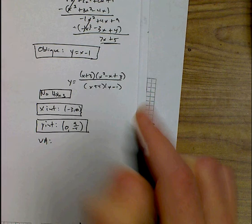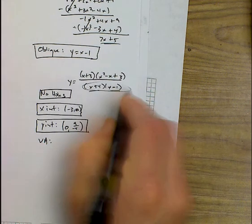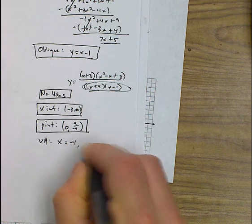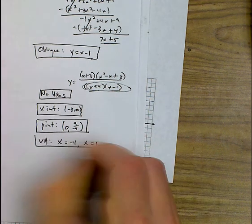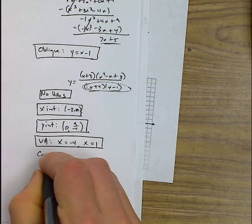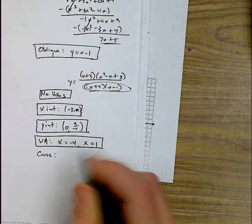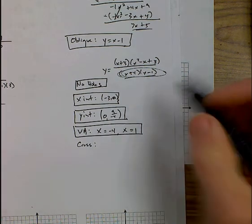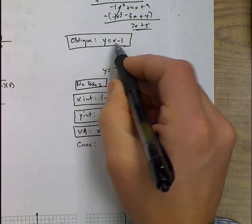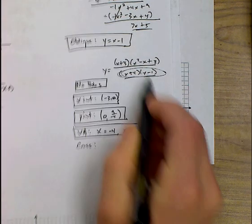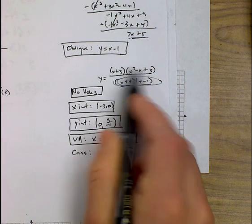Vertical asymptotes are where the graph is undefined. Well, the graph is undefined when this is equal to 0, when either of these are equal to 0. So I'm going to have vertical asymptotes at negative 4 and at 1. And the last thing I need to check for is if it crosses. This is probably the least exciting thing to check for.